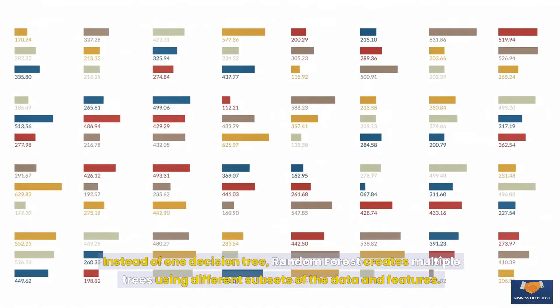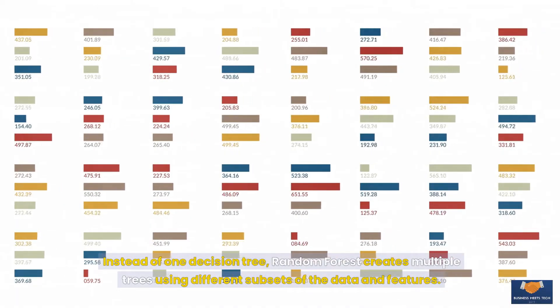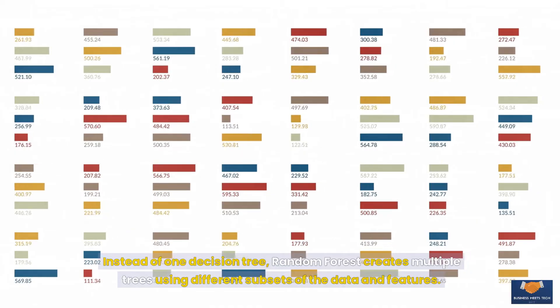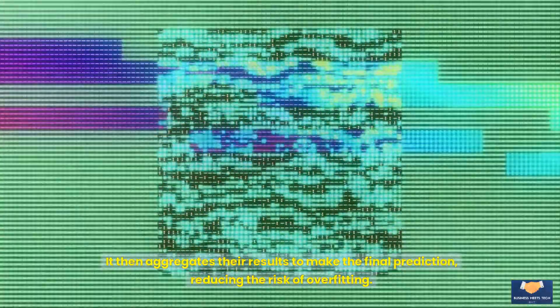Instead of one decision tree, random forest creates multiple trees using different subsets of the data and features. It then aggregates their results to make the final prediction, reducing the risk of overfitting.